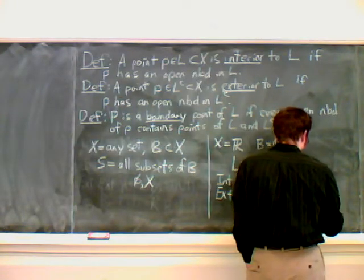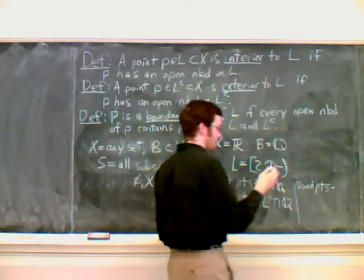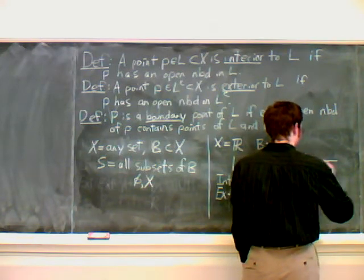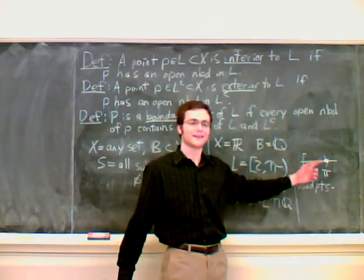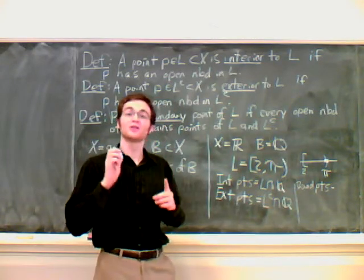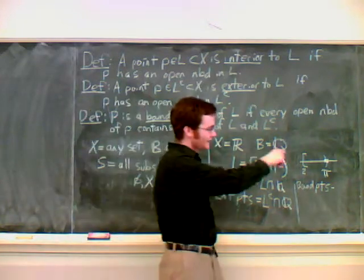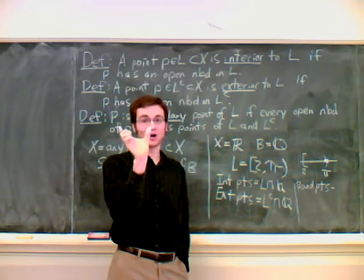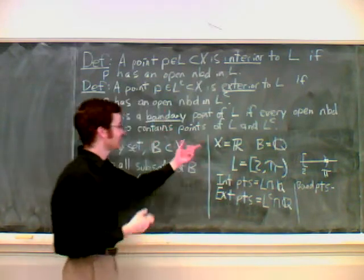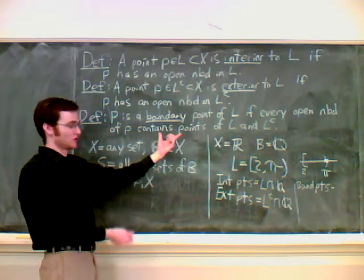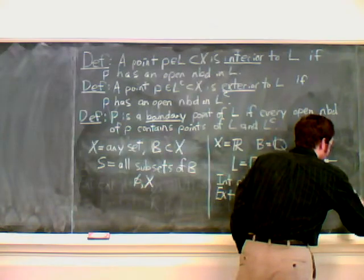Let's consider the boundary points. Say we have an irrational point. If we take π, the only open set that contains π is all of R, all of X, our entire set, because of our definition. Any irrational point is only in the open set R. Of course R has things in L and outside of L, so this definition is fulfilled. Every neighborhood of P, the only neighborhood of P, contains points of L and L complement. So the boundary points are all irrational numbers.